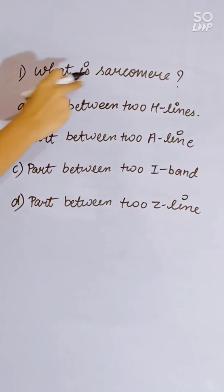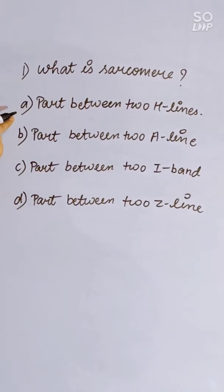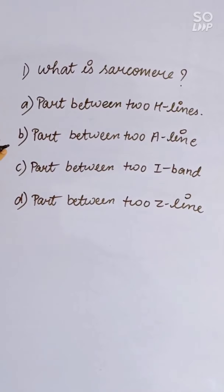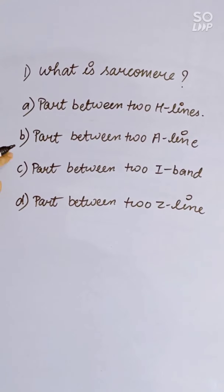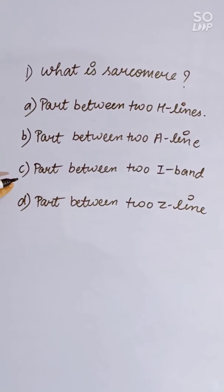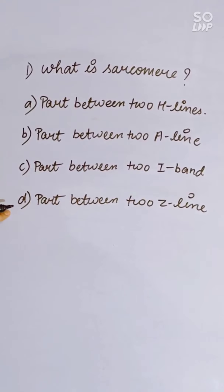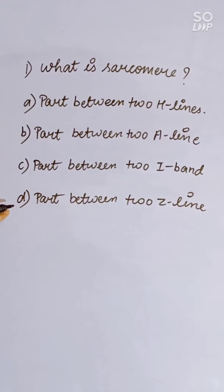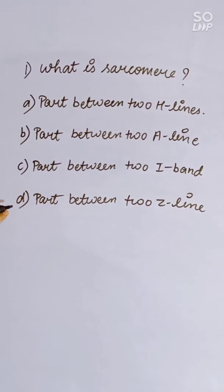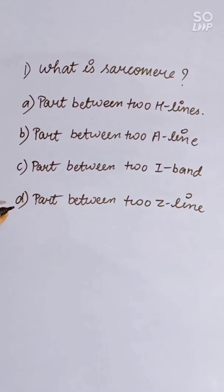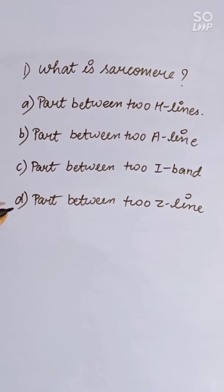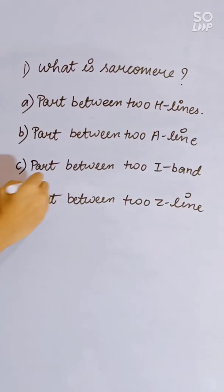What is a sarcomere? Options: part between two H lines, two A lines, two I bands, or two Z lines. The correct answer is the part between two Z lines, where the sarcomere is present.